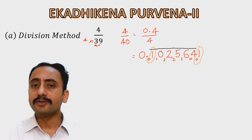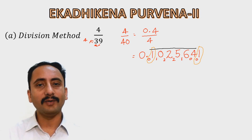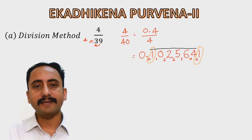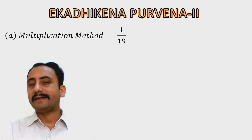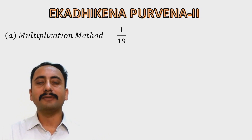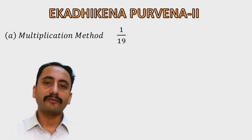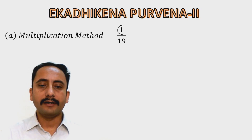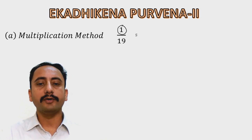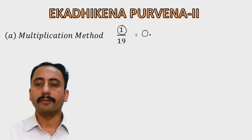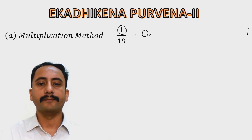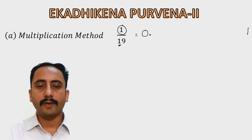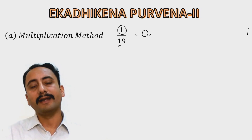Now we will try the same conversions using the multiplication method. For 1 upon 19, the difference from division method is that in the multiplication method we start from the right-hand side, which is unusual but actually easier. The numerator is 1, so we start with 1 on the extreme right. One more than 1 is 2, so 2 will be the multiplying factor.